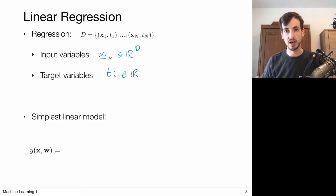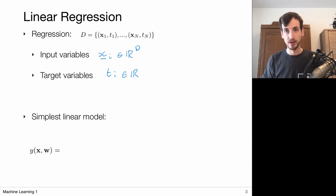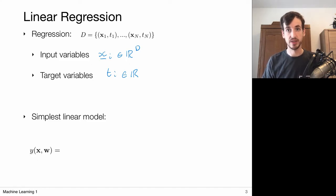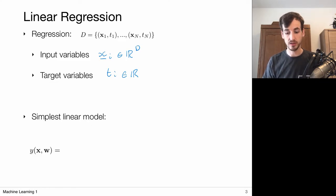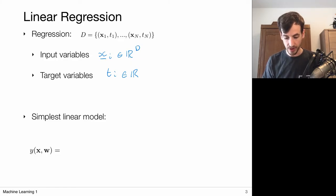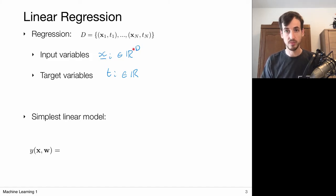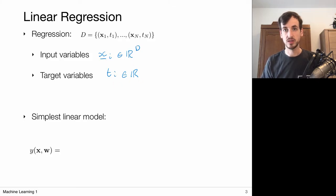This of course generalizes to predicting multiple values at the same time. Now let's think of a concrete example. Suppose my task is to predict house prices and I'm given the floor area, the age or building year of the house, and maybe how big the garden is. All these parameters can be stacked into one input vector — so I have d measurements on which I base my prediction — and my prediction will be the house price, just one number.